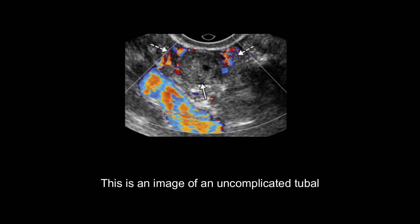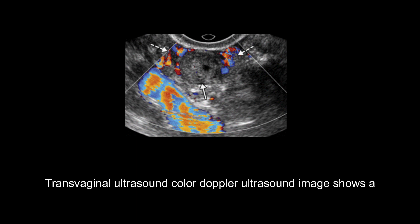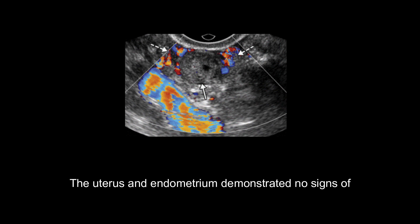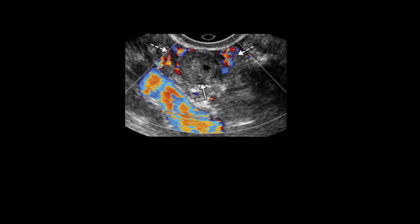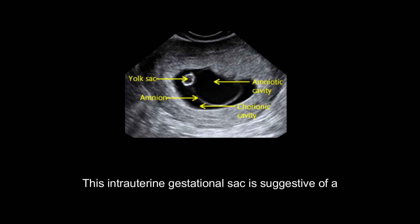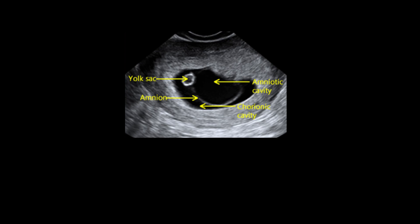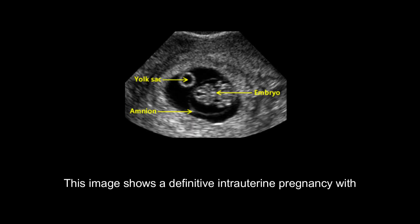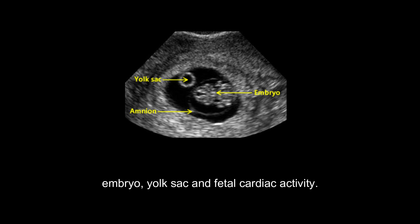This is an image of an uncomplicated tubal ectopic pregnancy. Transvaginal ultrasound color Doppler image shows a peripheral rim of flow (dashed arrows) around the fallopian ectopic pregnancy (solid arrow). The uterus and endometrium demonstrated no signs of intrauterine pregnancy. This intrauterine gestational sac is suggestive of a probable intrauterine pregnancy. This image shows a definitive intrauterine pregnancy with embryo, yolk sac, and fetal cardiac activity.